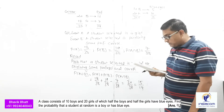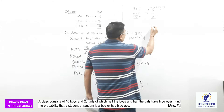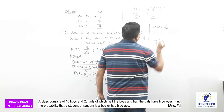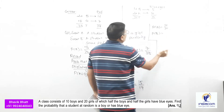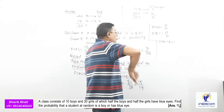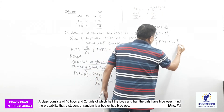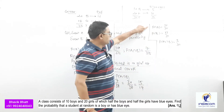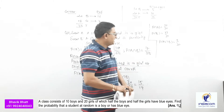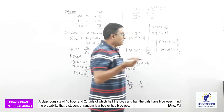Find the probability that a student selected at random is a boy or has blue eyes. Event A: student selected is a boy — 10 out of 30, so P(A) = 10/30. Event B: student selected has blue eyes — 15 total, so P(B) = 15/30. A intersection B: boys with blue eyes = 5, so P(A∩B) = 5/30. Therefore P(A∪B) = 10/30 + 15/30 − 5/30 = 20/30 = 2/3.